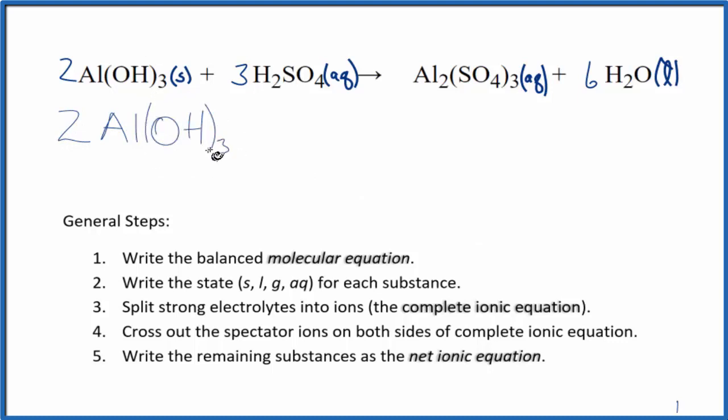And I won't write the states right now. We'll write those when we're done. For H2SO4, hydrogen group 1 has a 1 plus charge. And this entire sulfate ion has a 2 minus. That's a good one to remember.